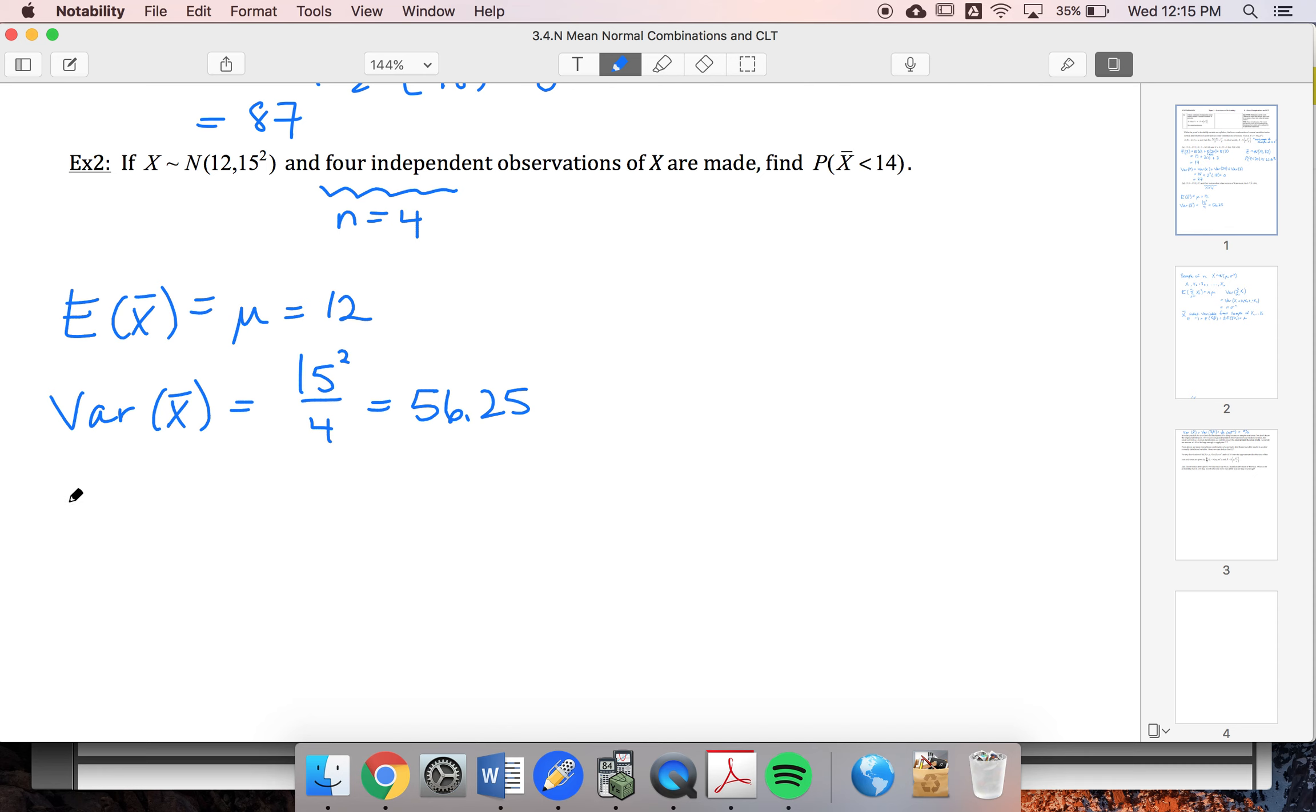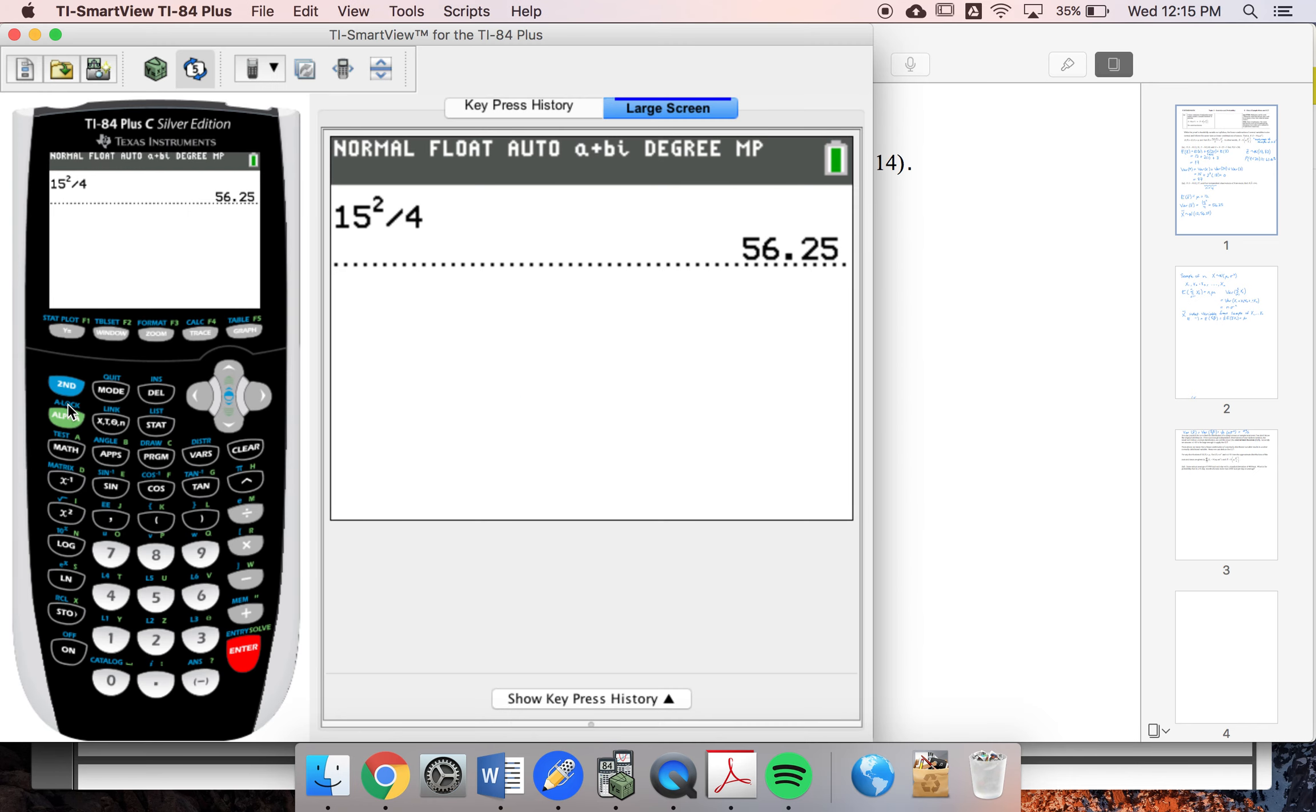So my x bar is then a normal distribution, 12, 56.25. So probability that x bar is less than 14.